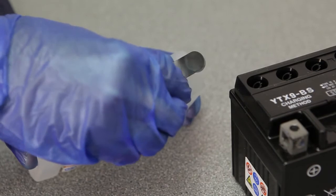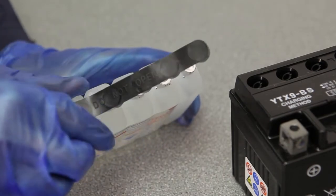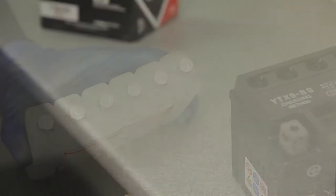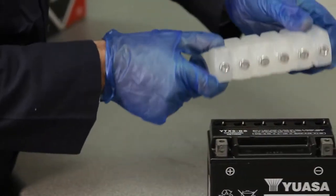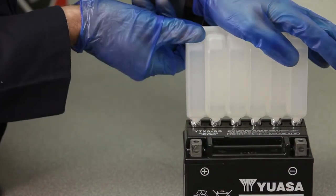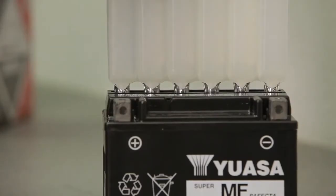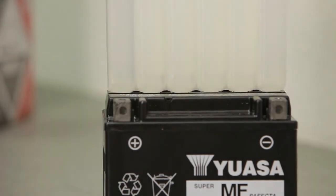Detach the cap strip from the container and put it to one side. This will be used to seal the battery when charging is complete. The electrolyte container is made up of individual cells, each sealed at the top. Place it upside down into the filler ports of the battery. Ensure it's level and push it down to break the seals on the cells.